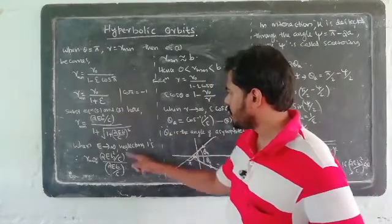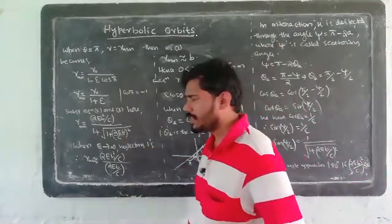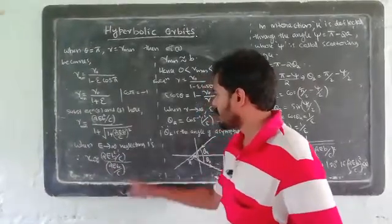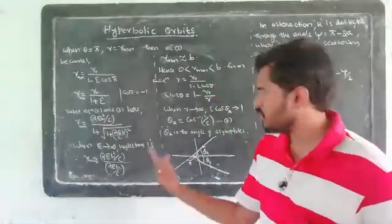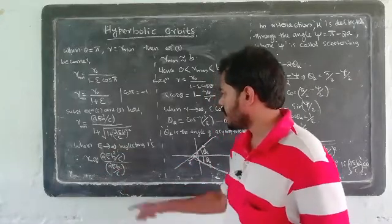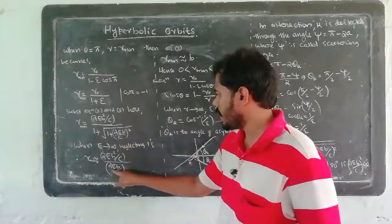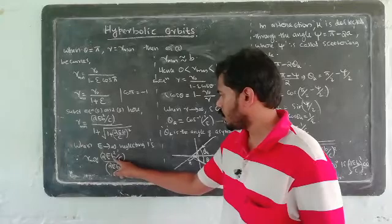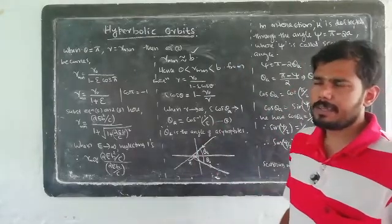We find the term (2E b / c) whole squared for R minimum. R minimum is approximately equal to 2E b squared by c, divided by 2E b by c whole squared, which simplifies to b. So R minimum is approximately equal to B, the impact parameter.